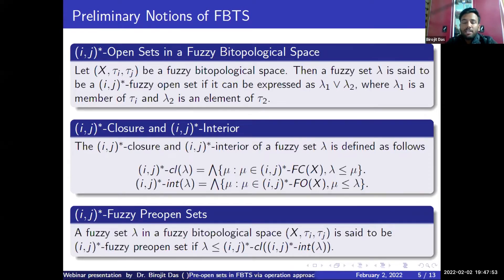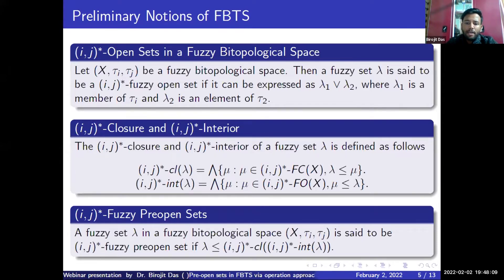The complement of an IGstar fuzzy open set is called an IGstar fuzzy closed set. Based on those open and closed sets, the IGstar closure and IGstar interior operators are defined. The IGstar fuzzy pre-open set is also defined: a fuzzy set lambda is called a fuzzy pre-open set if it is less than or equal to the closure of the interior of that set.